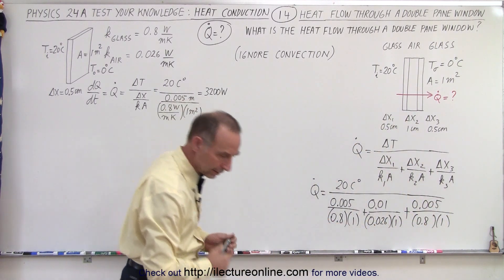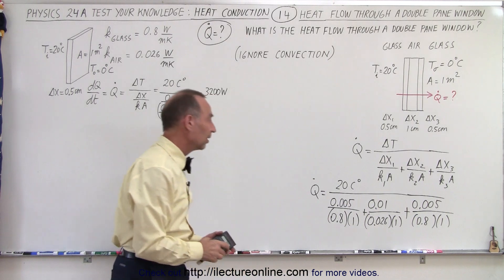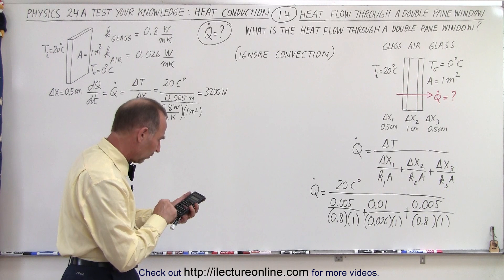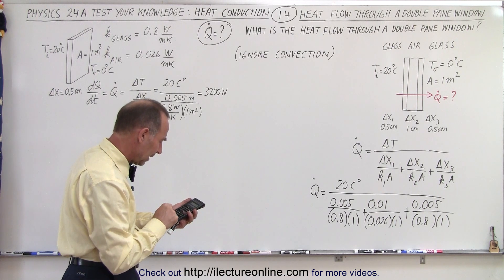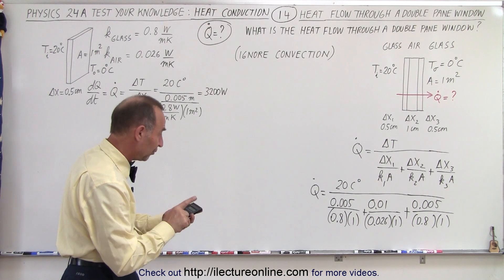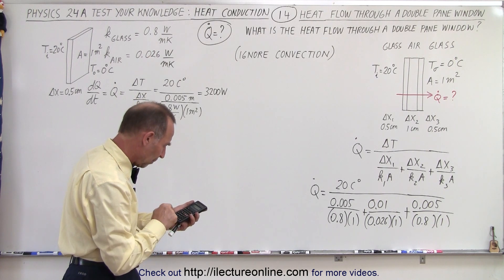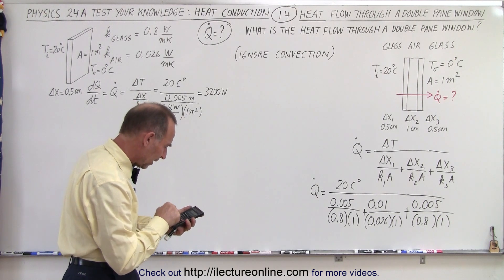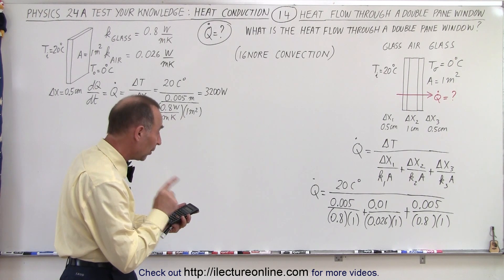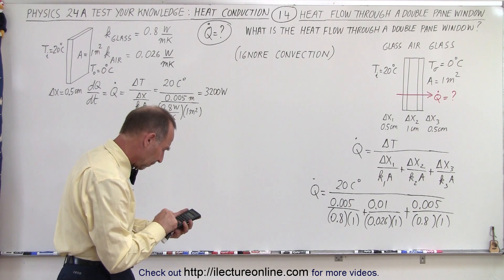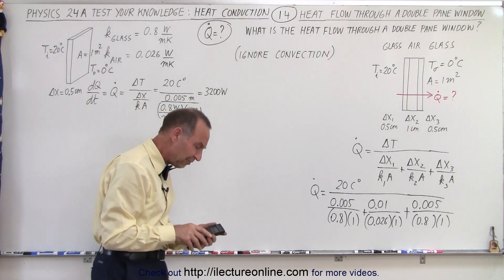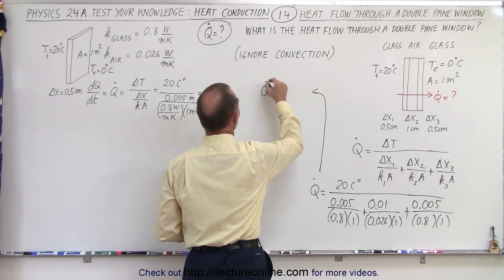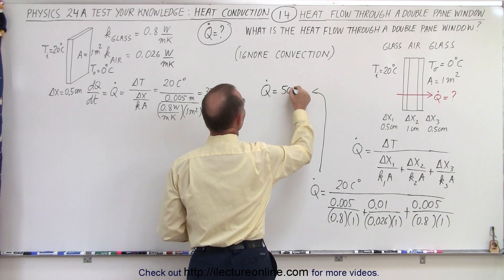All right, now we need a calculator to figure out what that is, and the answer is going to be in watts. So taking the denominator, 0.005 divided by 0.8, and we multiply that times two, because we have two of those terms, we add that to the middle term, 0.01 divided by 0.026, equals, take the inverse of that, and then multiply that times 20. And we get about 50, 50.4, or just say that here we can say that Q̇ is equal to 50 watts.